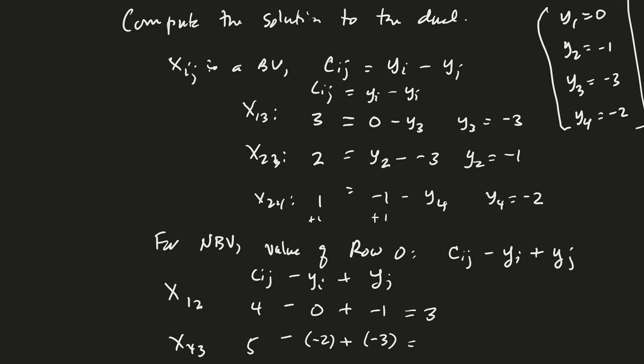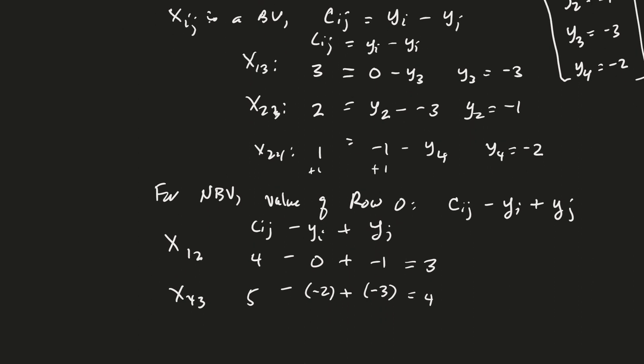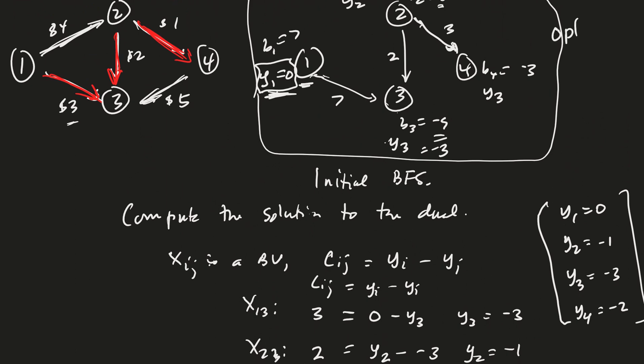I think that might have had a different value in class. Well, we'll just have to pay attention to those negative signs. But that's going to be 7, it looks like, right? 7 minus 3 will give me a 4. Good. And so what we see here is that because these values are both positive, then we have up here, this is actually the optimal flow.